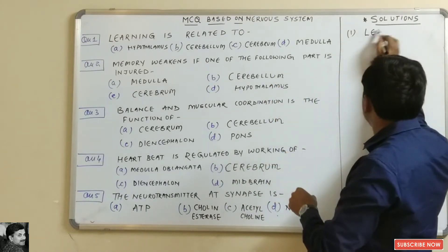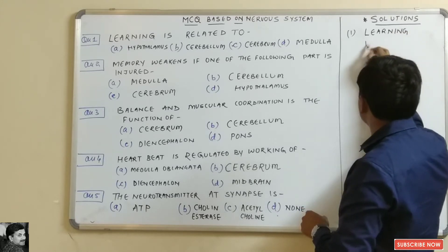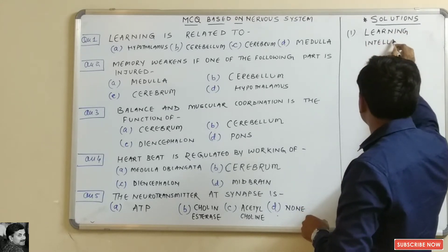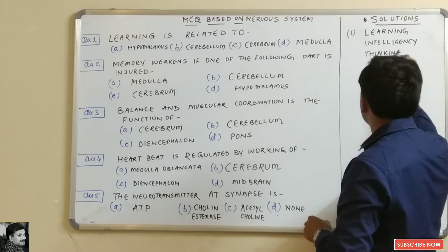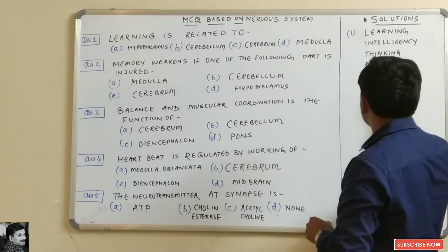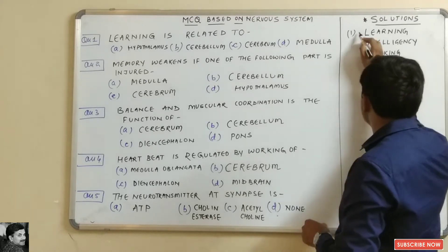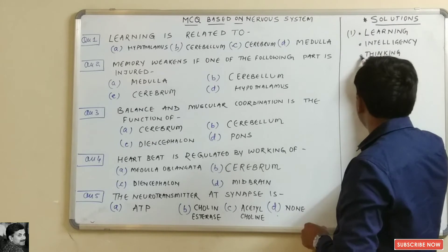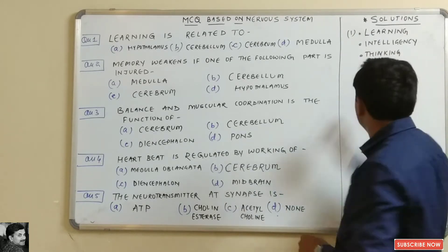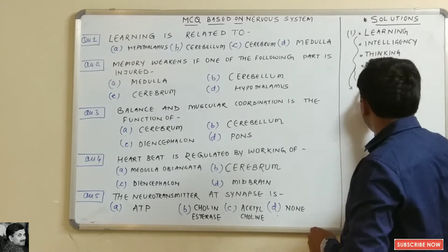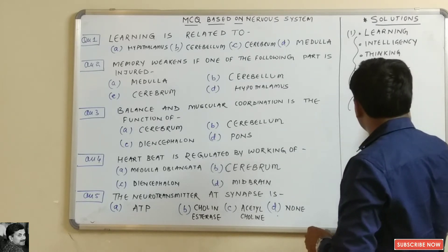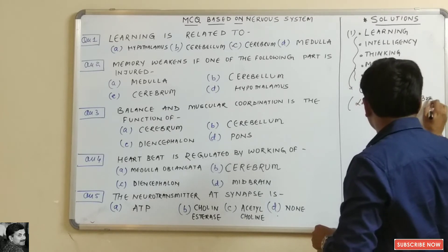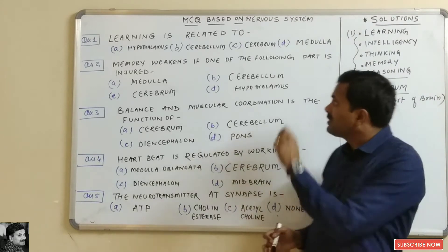For question number one, you must know that learning, intelligence, thinking, memory, and reasoning are all voluntary actions and very important functions of the brain. They are all associated with the cerebrum, which is the largest part of the brain.